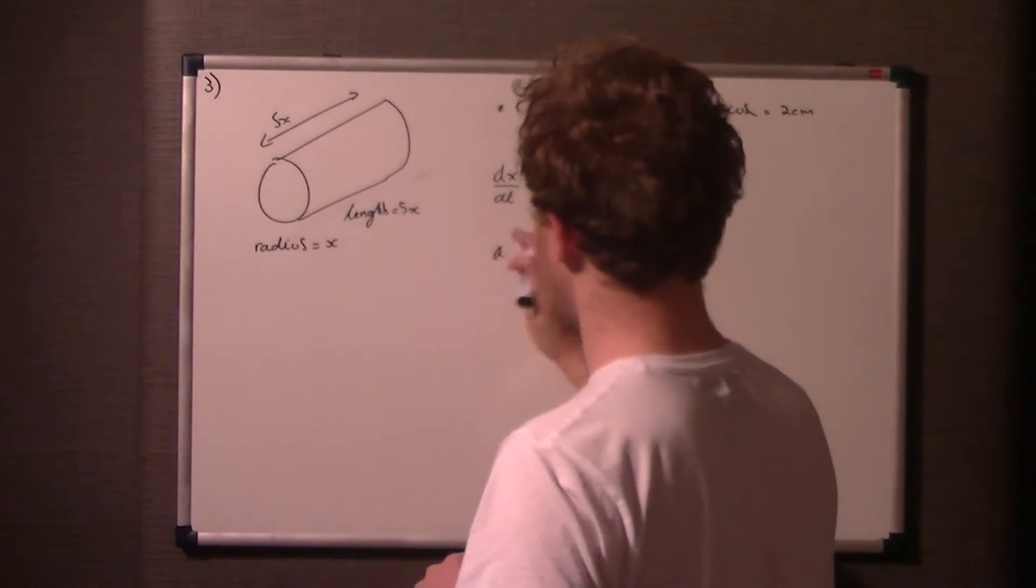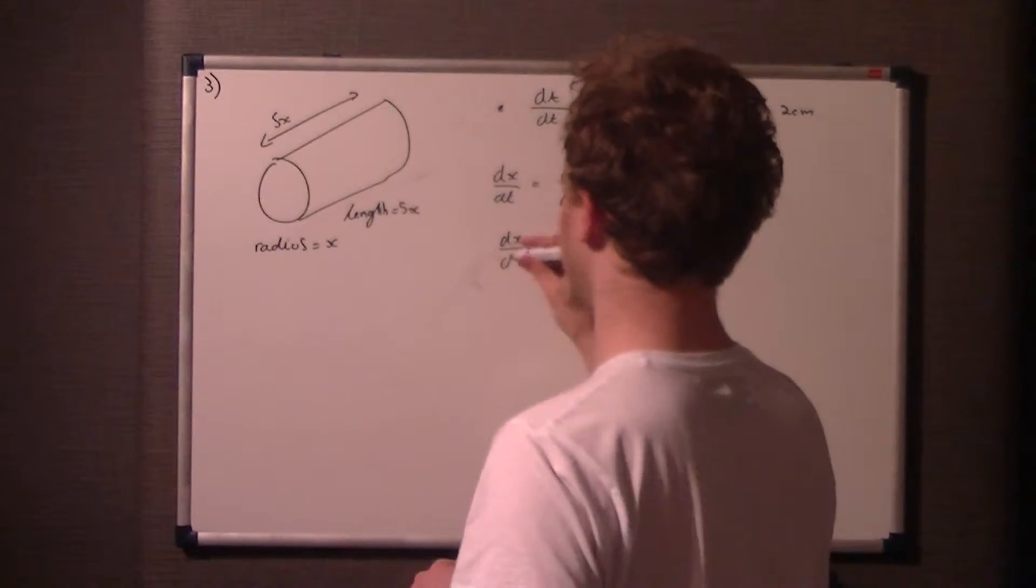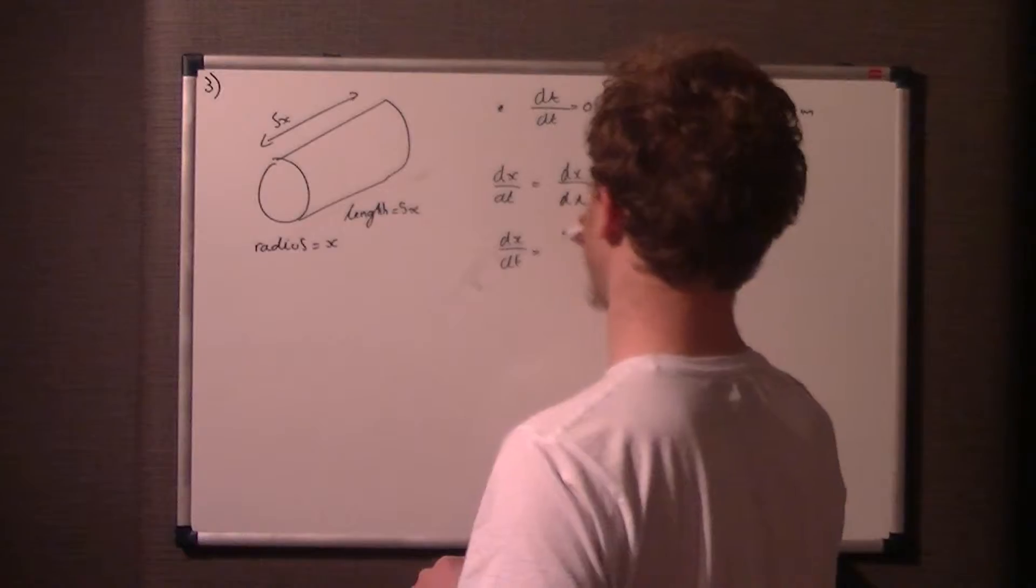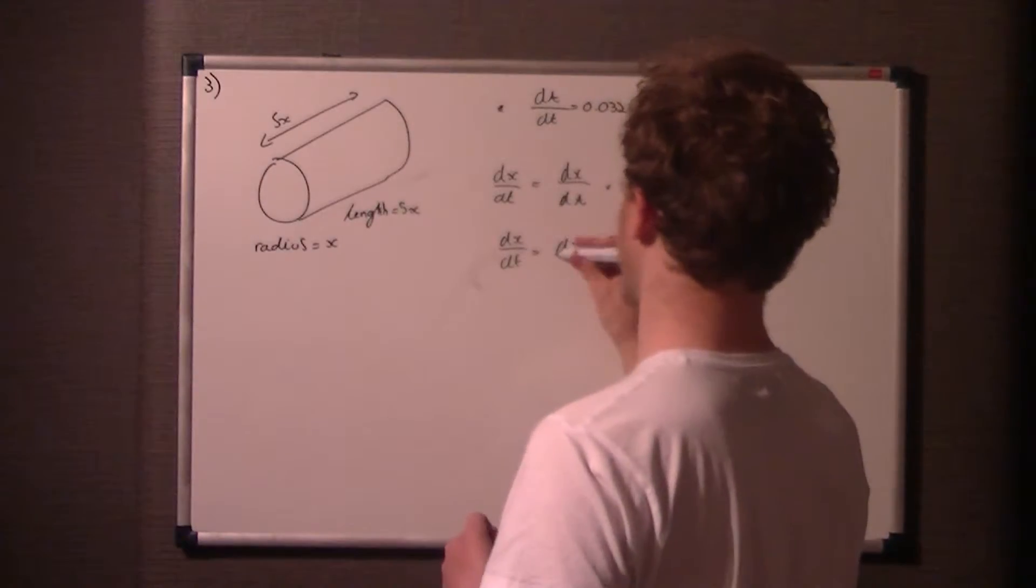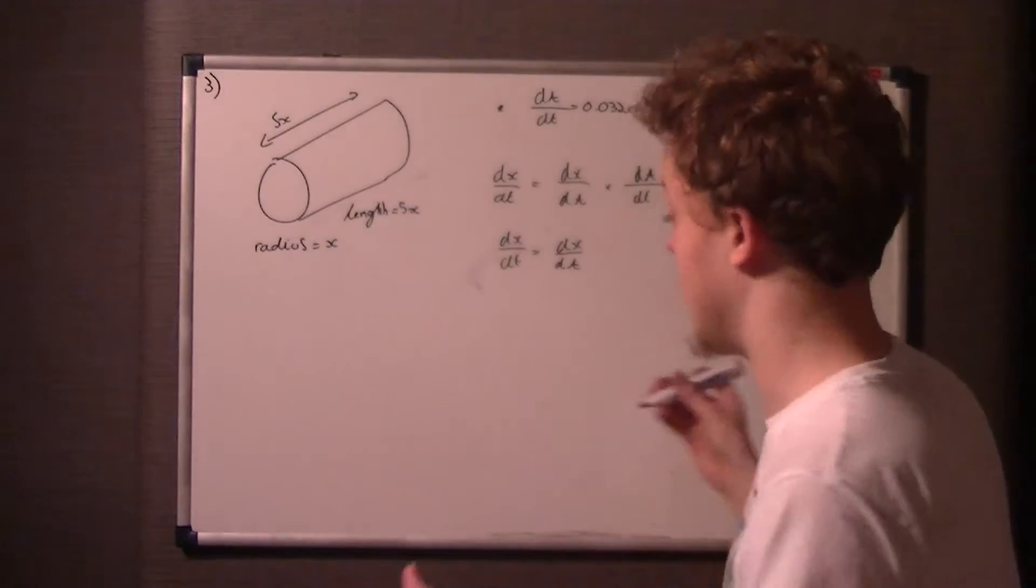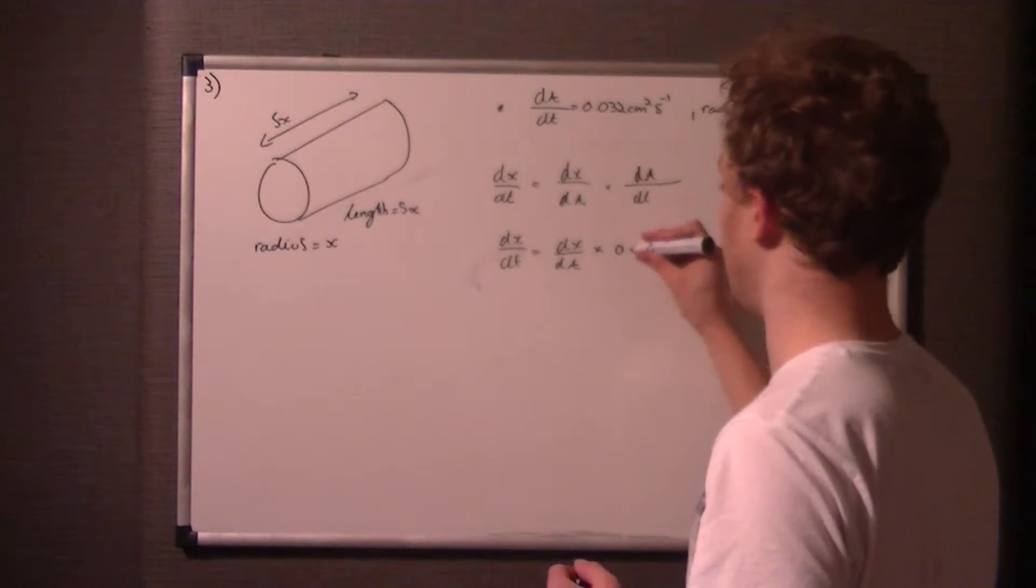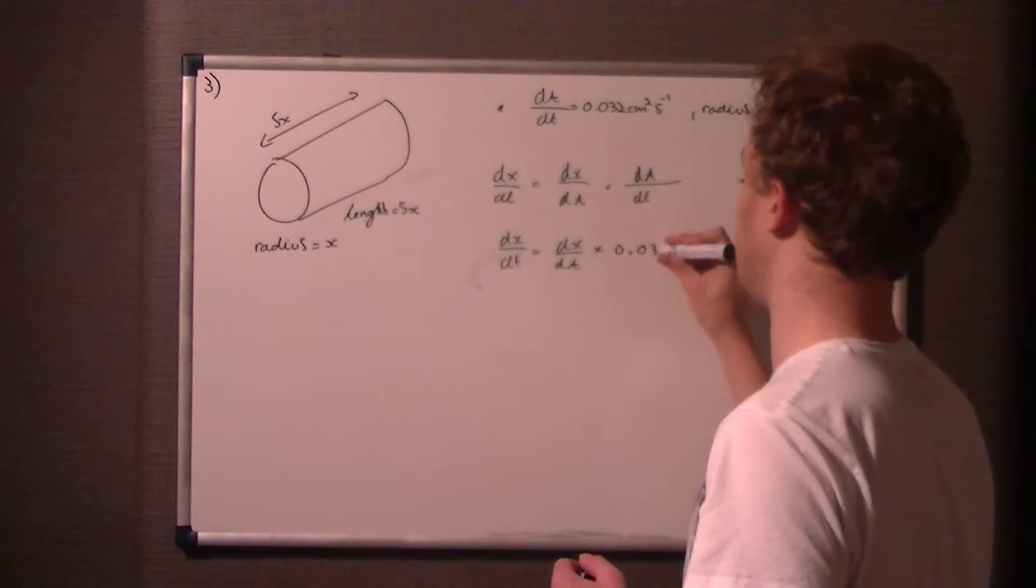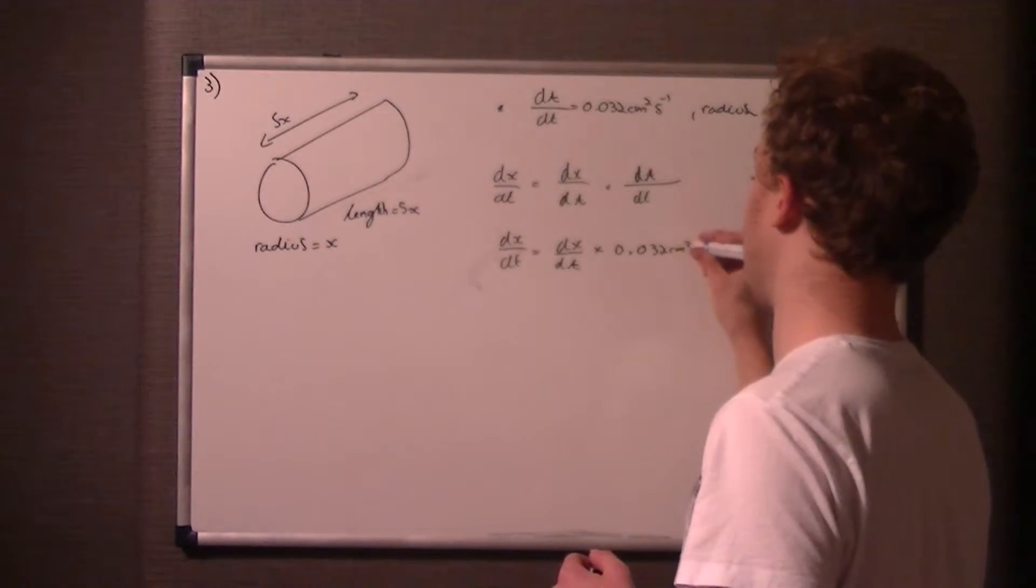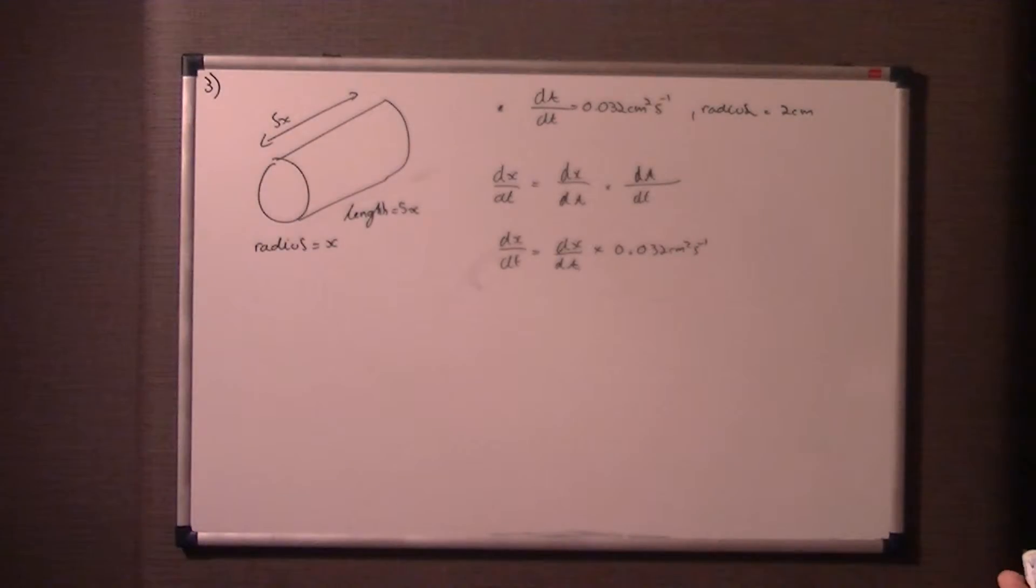So dx/dt, you just sub in what you know. dx/dt is equal to dx/da. Now we don't know what dx/da is, so I'm just going to write in at this stage dx/da. You could find that out just now, but I'm just going to do it in stages. And we know da/dt is 0.032 cm² per second, so I'm just going to write that in there.